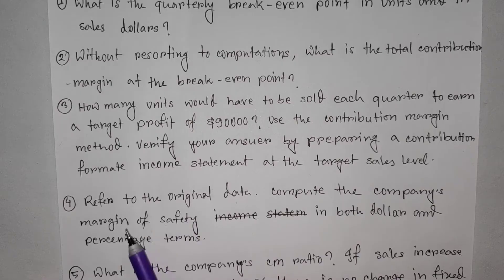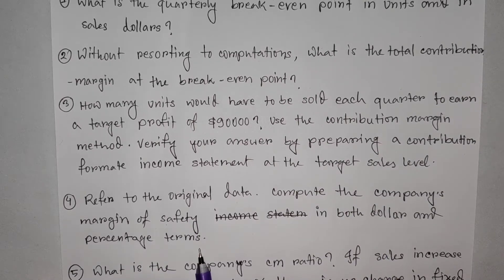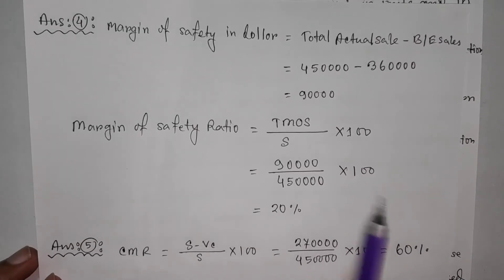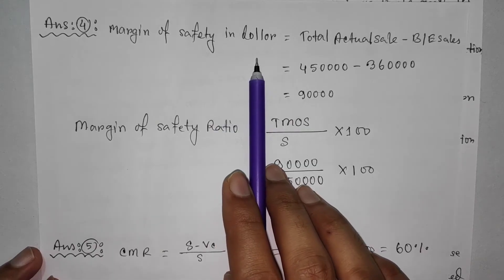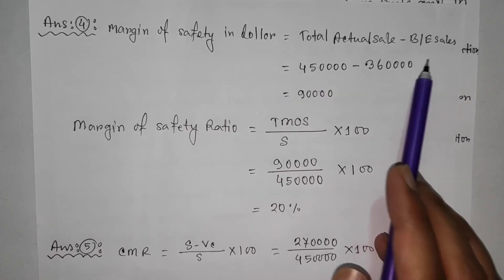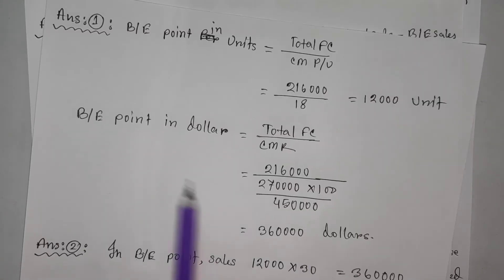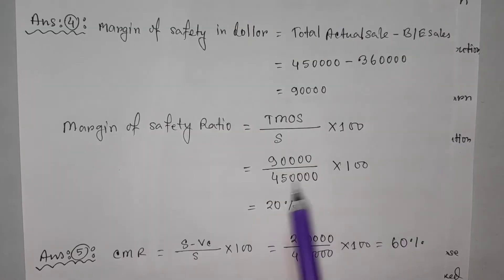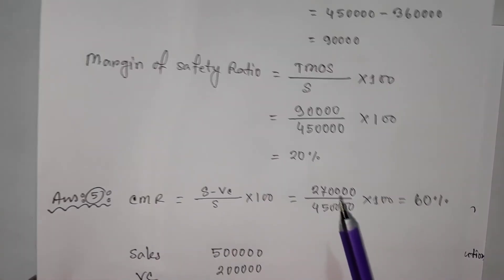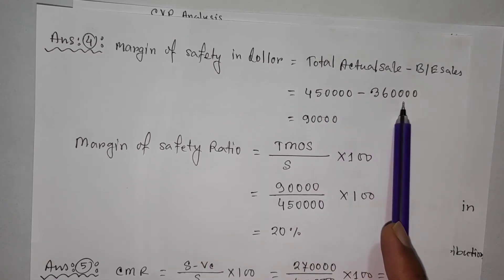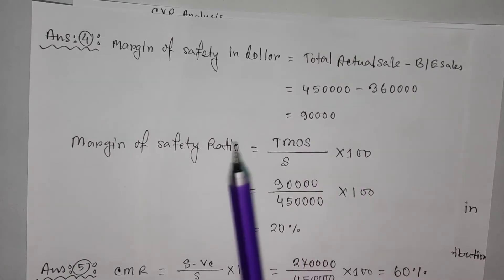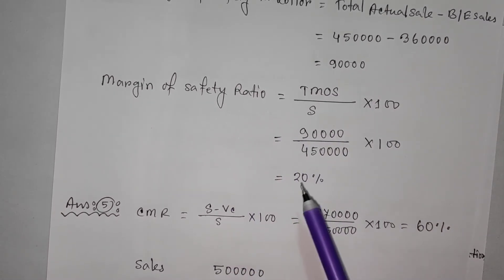Referring to the original data, compute the company's margin of safety in both dollar and percentage terms. Margin of safety equals total actual sales minus break-even sales. So we take the actual sales and subtract the break-even point sales to find the margin of safety in dollars.